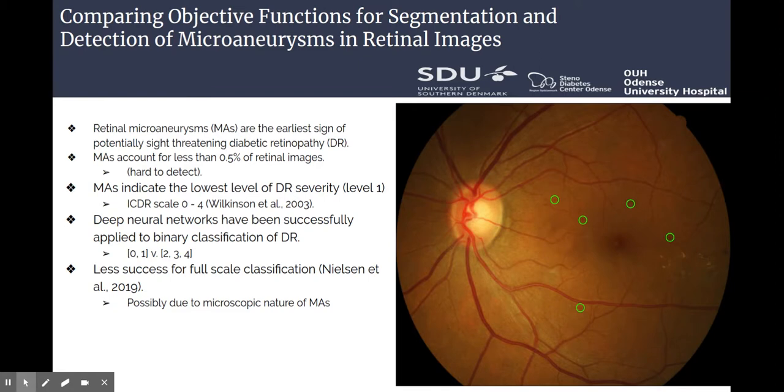While deep neural networks have been successfully applied to binary classification of diabetic retinopathy, they have so far had less success for full-scale classification, possibly due to the microscopic nature of microaneurysms.